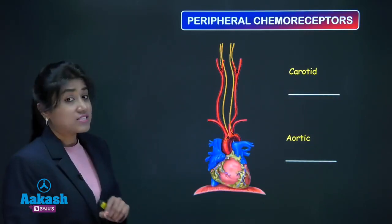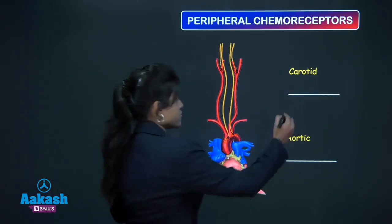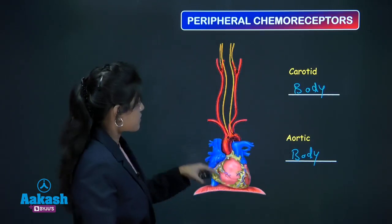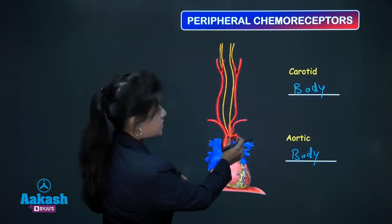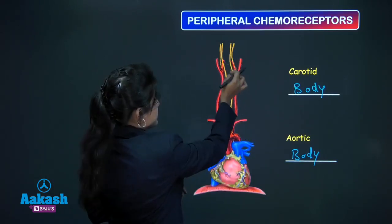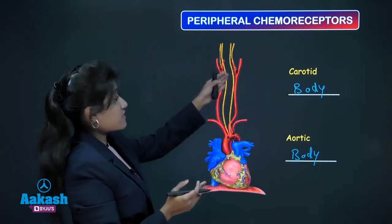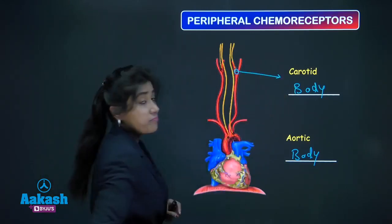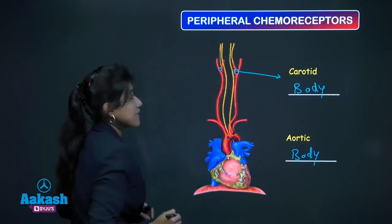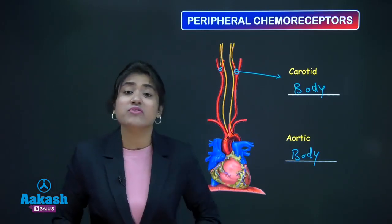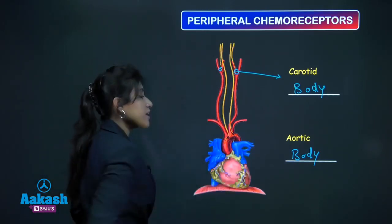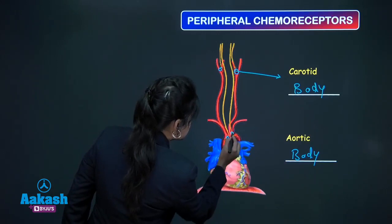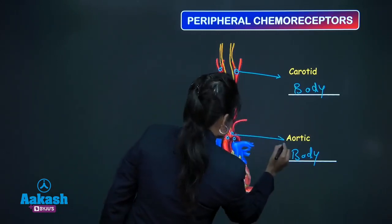The carotid body is located near the bifurcation of the common carotid artery, where the common carotid divides into the internal and external carotid artery. The aortic body is present in the arch of aorta.